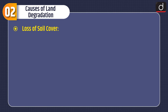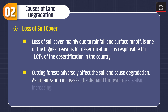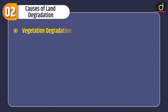Now let us discuss the causes of land degradation. First is loss of soil cover. Loss of soil cover, mainly due to rainfall and surface runoff, is one of the biggest reasons for desertification. It is responsible for 11.01% of desertification in the country. Cutting forests adversely affects the soil and causes degradation. As urbanization increases, the demand for resources is also increasing.